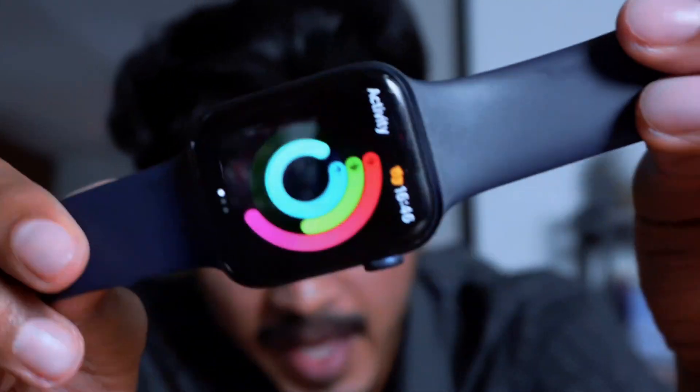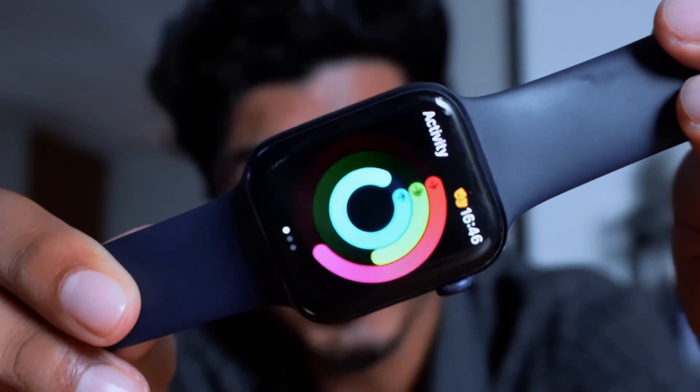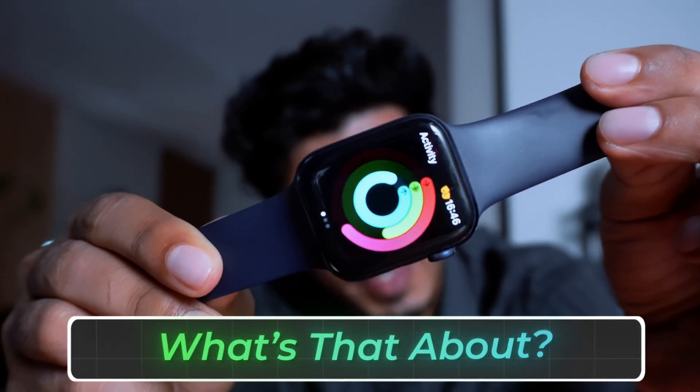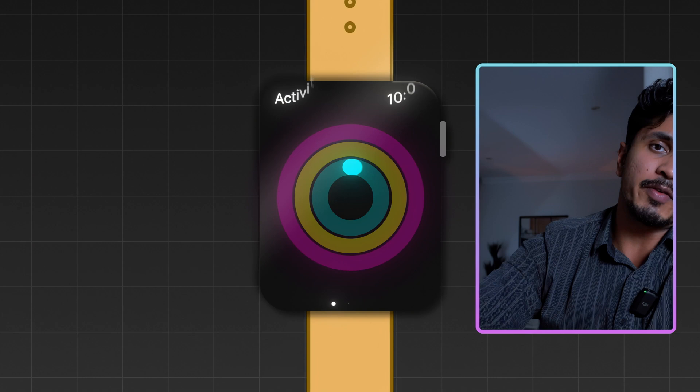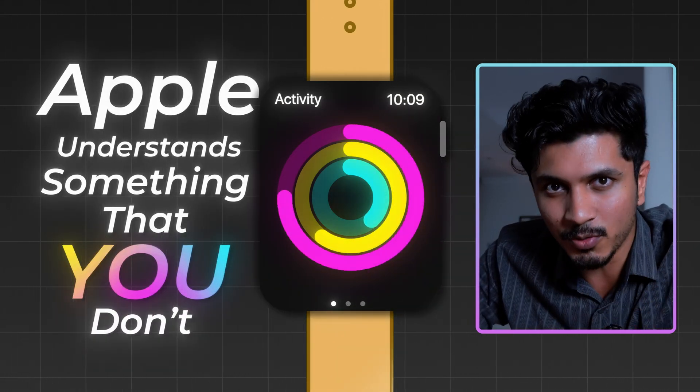Well, for starters, take this Apple Watch for example. It is obsessed with rings and you closing them. What's that about? It uses this very ring because Apple understands something that you don't.